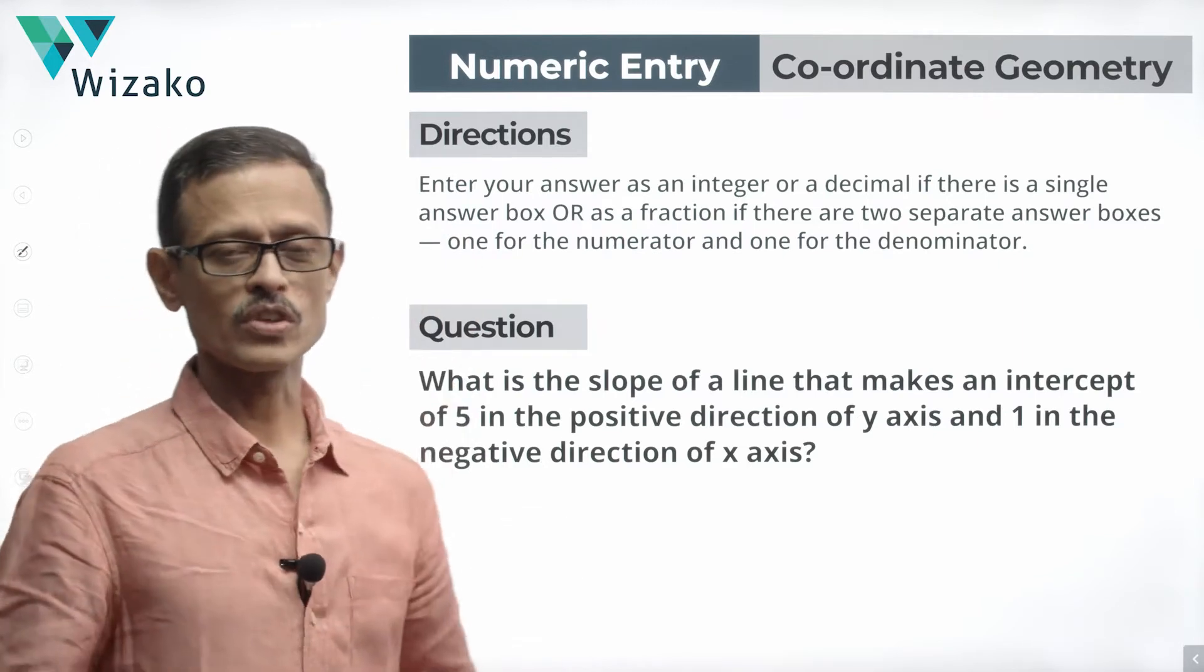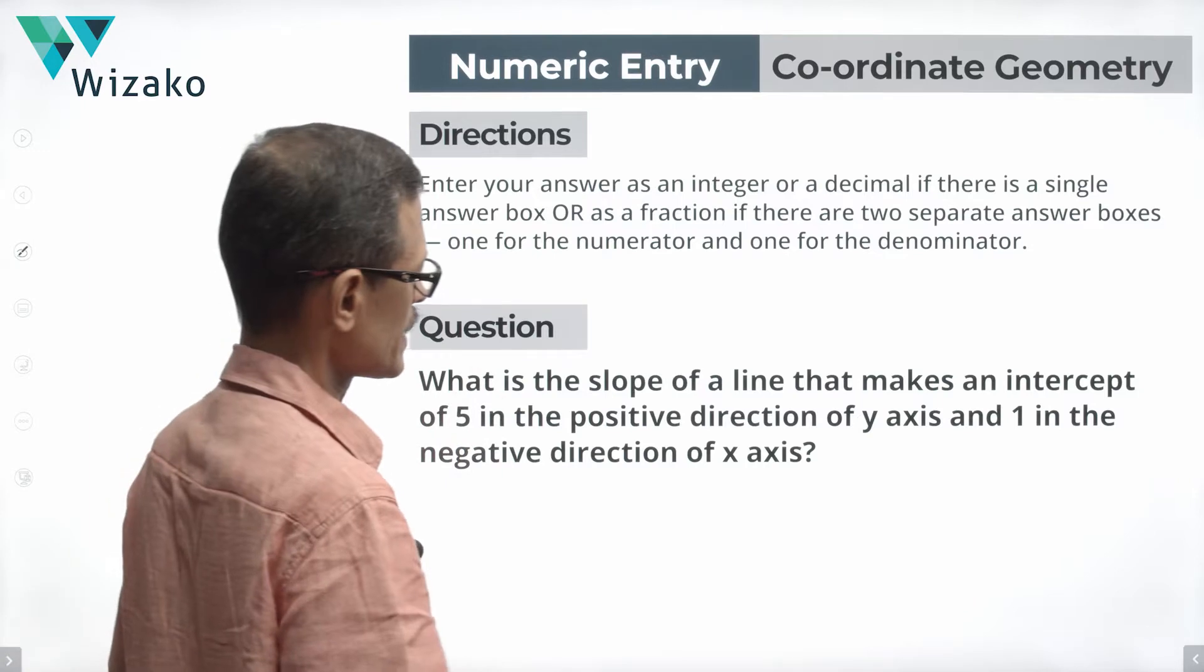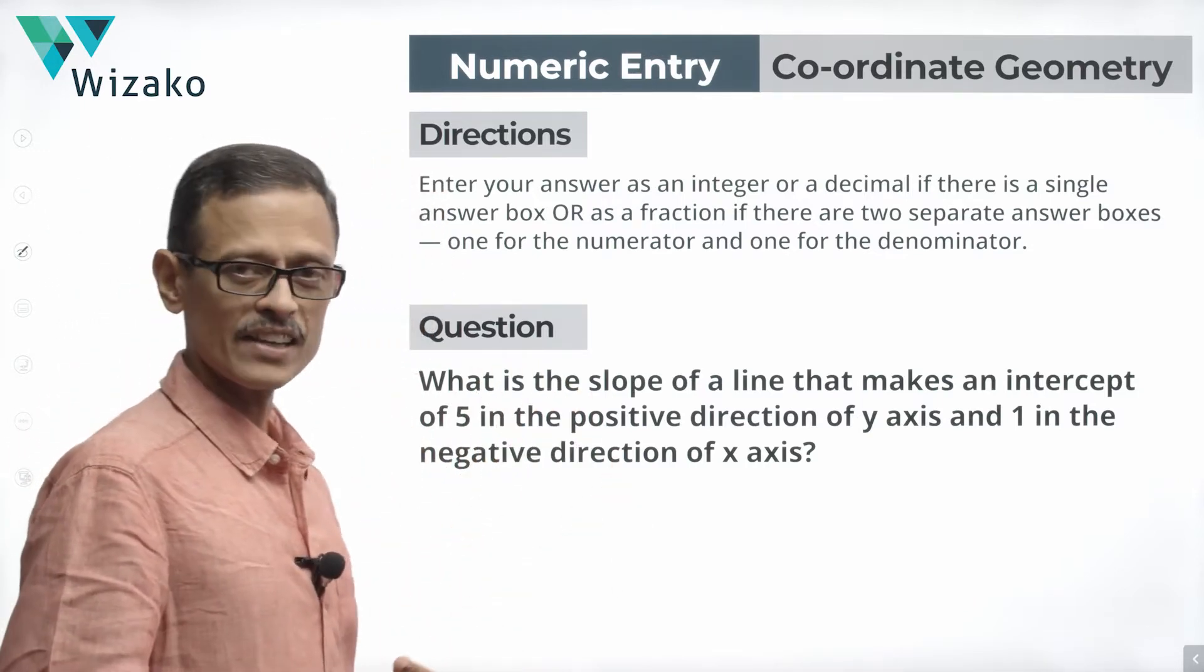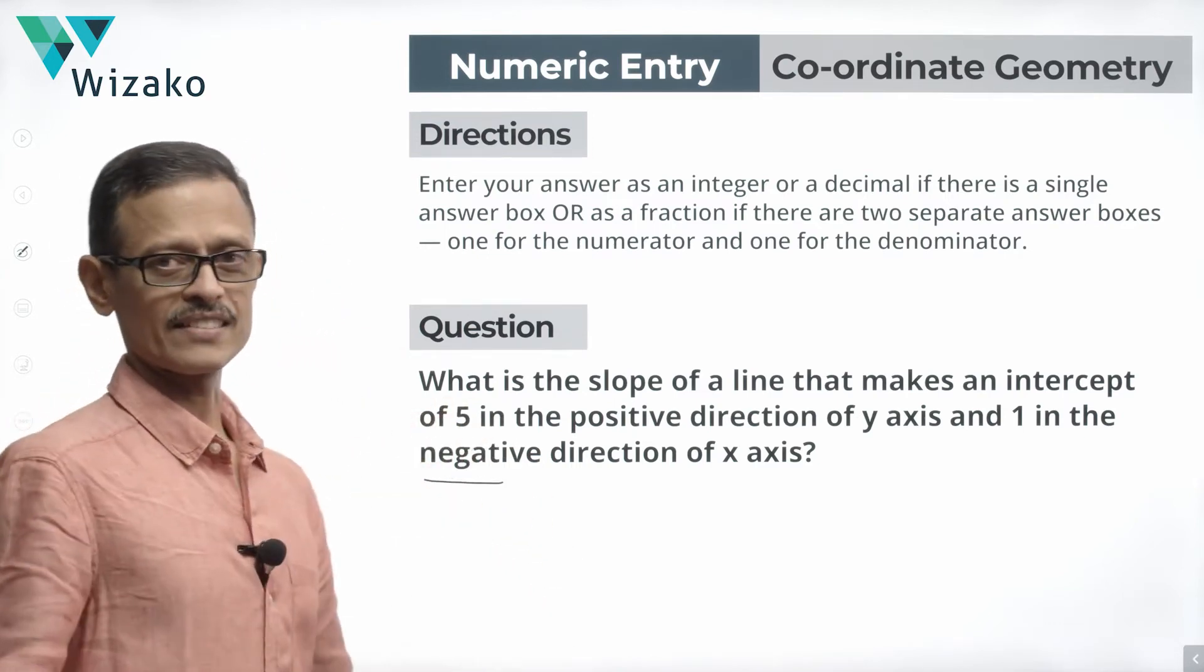These are the instructions to solve any numeric entry question. We will take a look at the question right away. What is the slope of a line segment that makes an intercept of 5 in the positive direction of y-axis and 1 in the negative direction of x-axis?